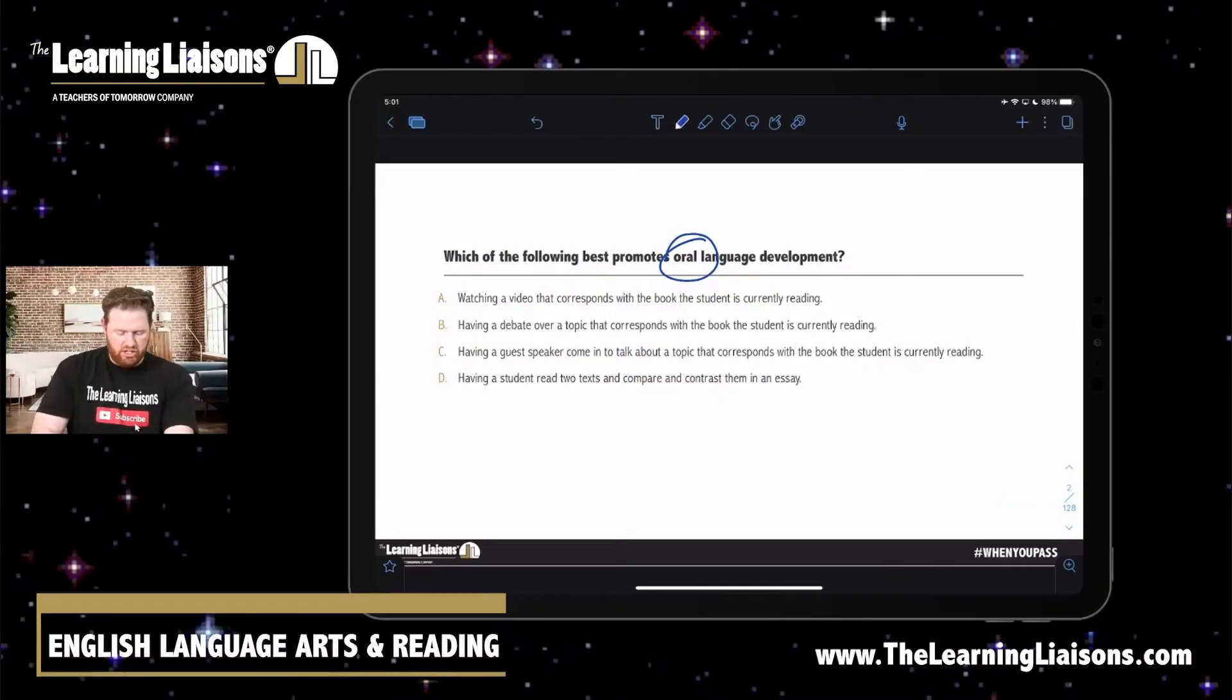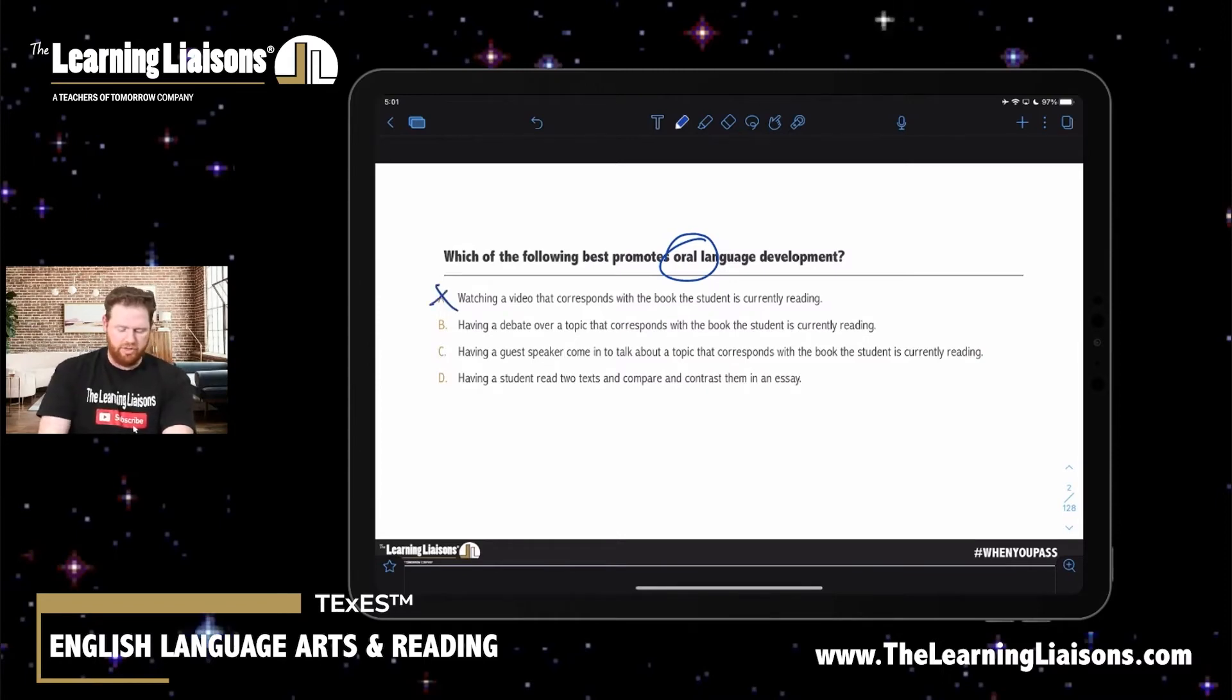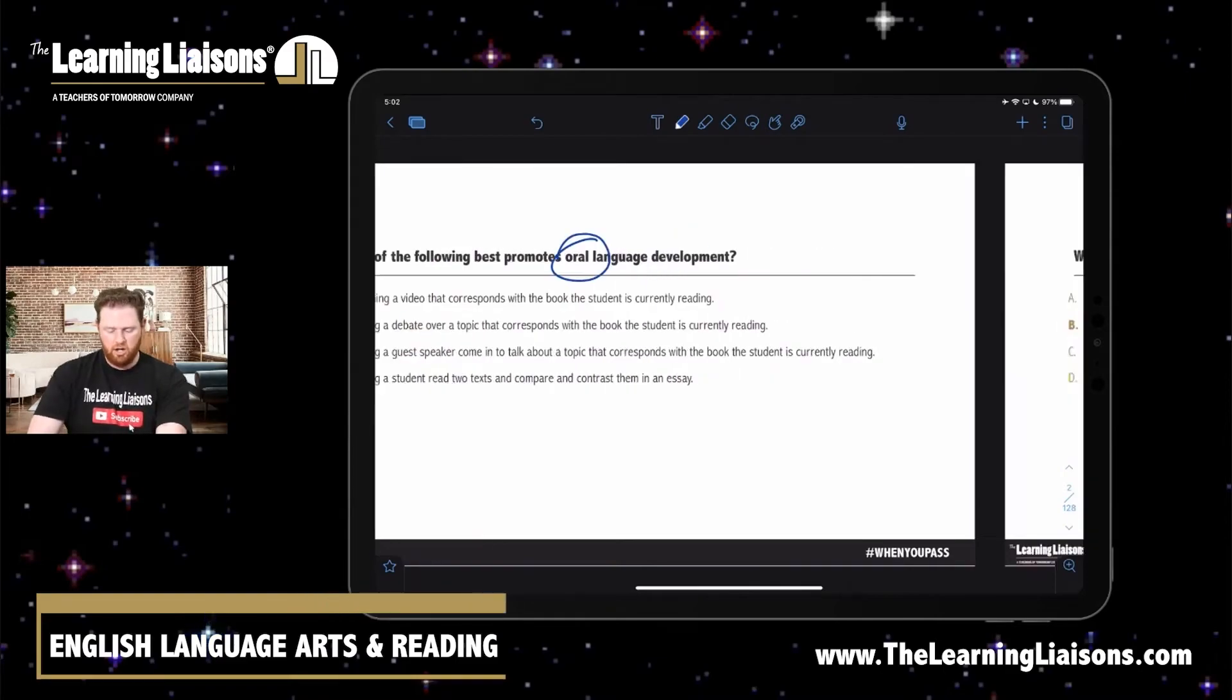So when we look at these answer choices, A is immediately out because if you're watching a video that does not have anything to do with oral language development. A debate definitely does because there's a lot of thoughts and ideas kind of free flowing. There's oral language development going on. That's our best answer so far. C, having a guest speaker come in. They're not the ones that need help with their oral language development. It's your students. So C is out. And then D, having a student read two texts compared to contrasting in an essay, that's writing language development, not oral language development. So D is out and B is our correct answer.